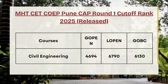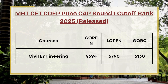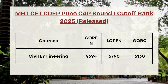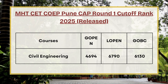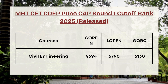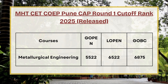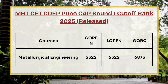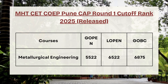Next in the list we have Civil Engineering. For G-Open the cutoff rank is 4694, for L-Open the cutoff rank is 6790, and for GOVC the cutoff rank is 6130.